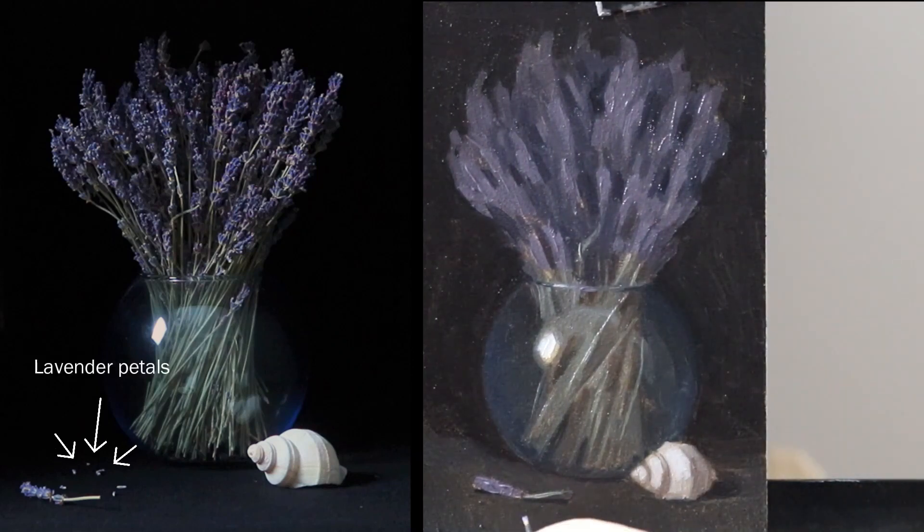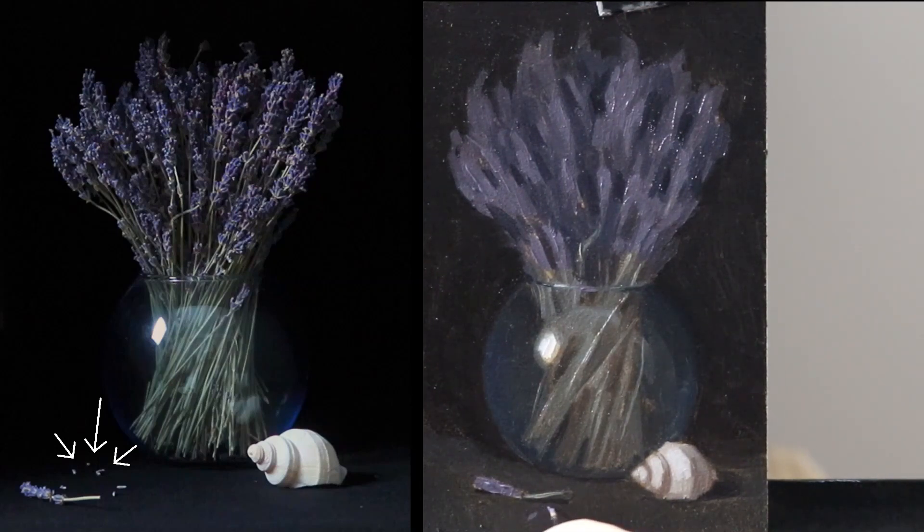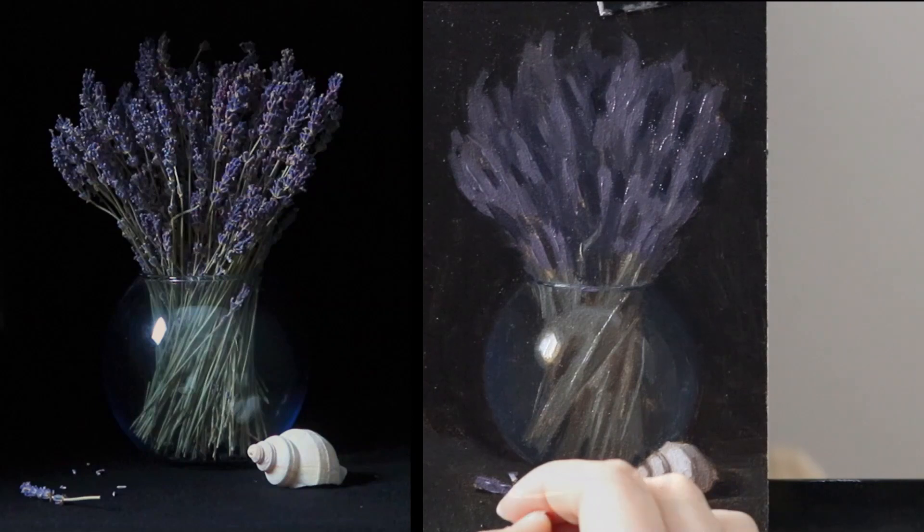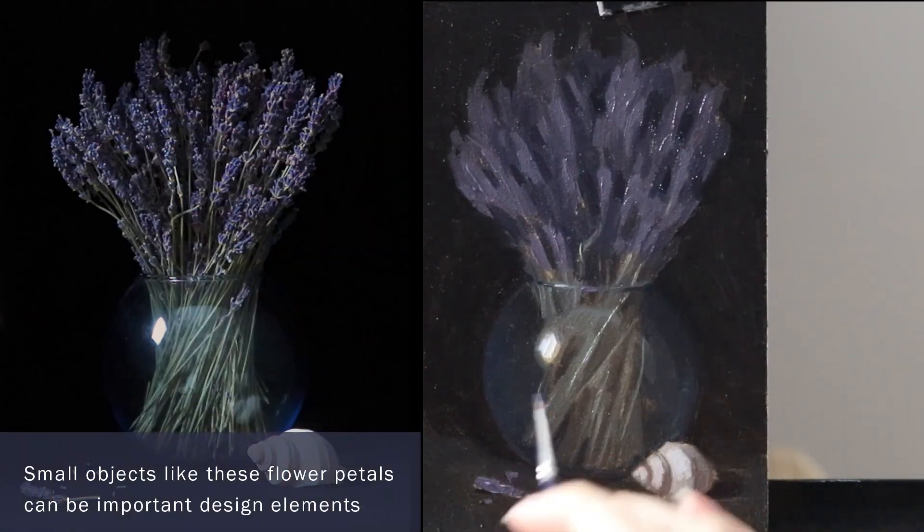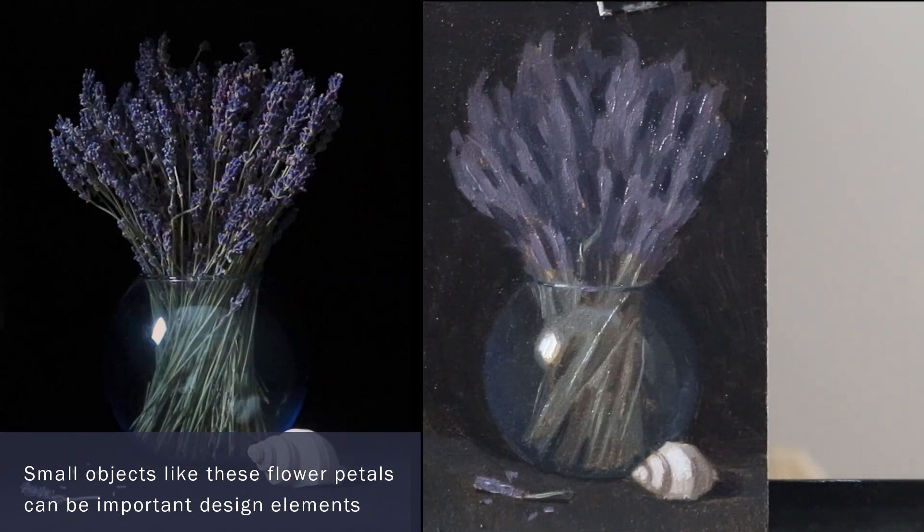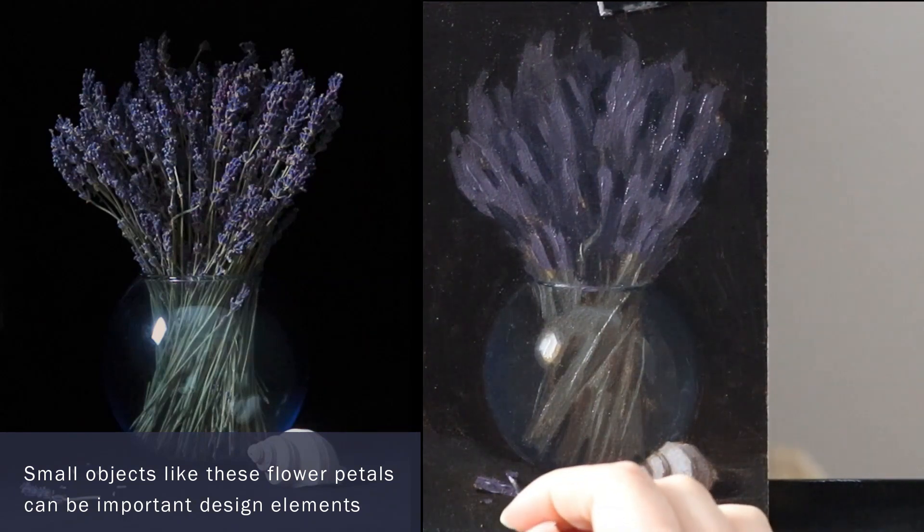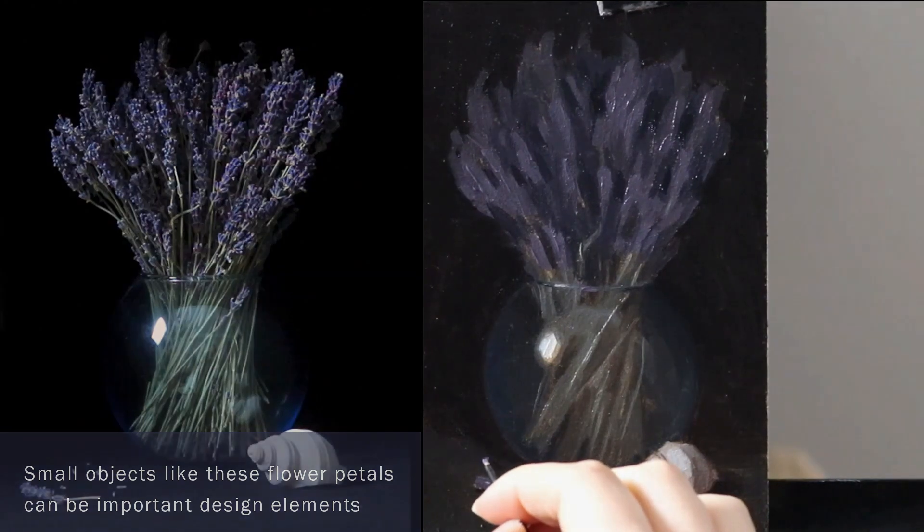The last element I haven't included which needs to be part of the study are the little lavender petals that are spread around the lavender flower in the foreground. These small petals can be an important design element, so to get these in and see how they work is important for the whole composition of the painting.